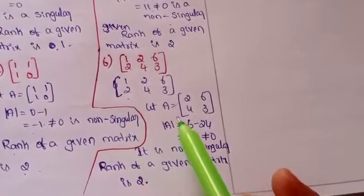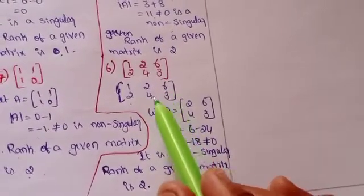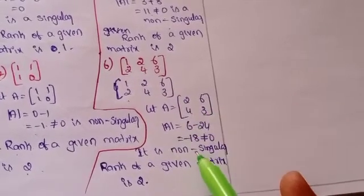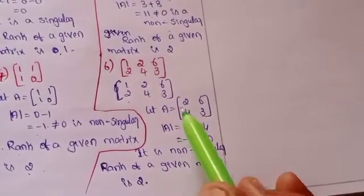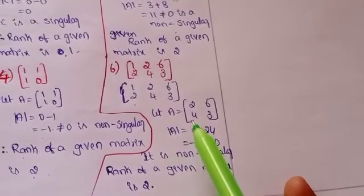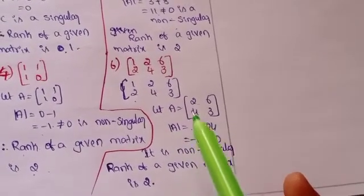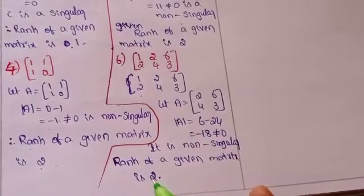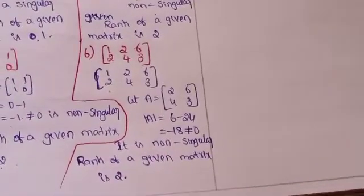Similarly for the sixth problem, I remove the first column to get sub-matrix A equal to 2, 6, 4, 3. The determinant of this matrix is minus 18, so it is a non-singular matrix and the rank is 2.